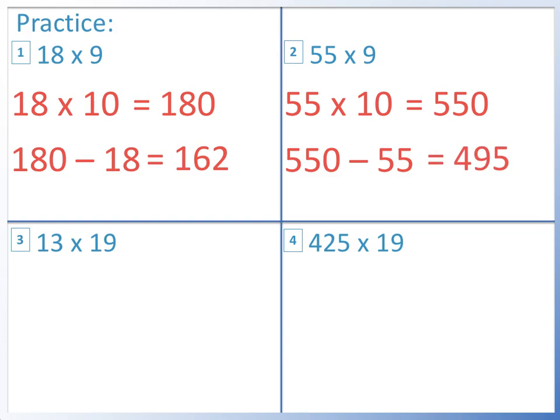Question 3: 13 times 19. First we find 13 times 20. 13 times 2 equals 26. 26 times 10 equals 260. 260 take away 1 lot of 13 equals 247.